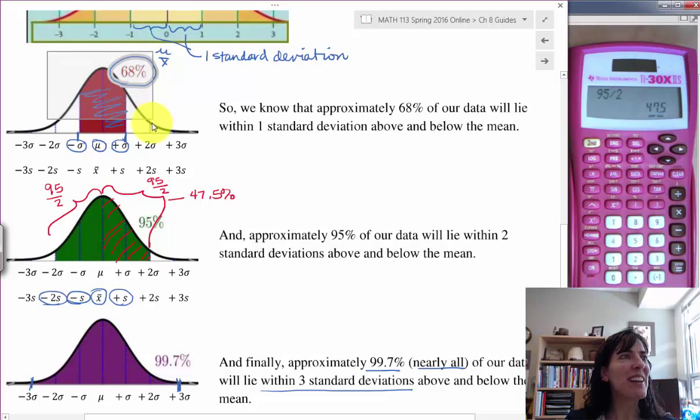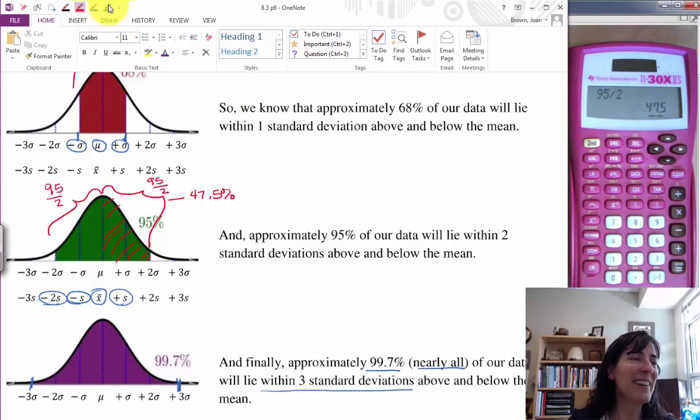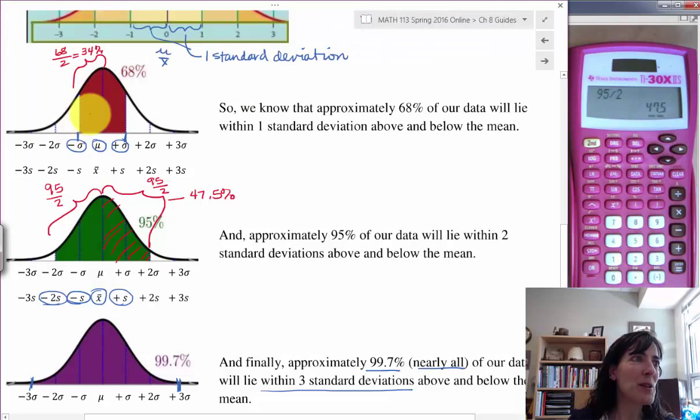And so we can do that on this one up here, too. If I move all my crazy writing, then what I know is this half over here is going to be 0.68 divided by 2, which is 34%. Or you can just think of it as 68 divided by 2. That's probably better. And the same thing on the right.